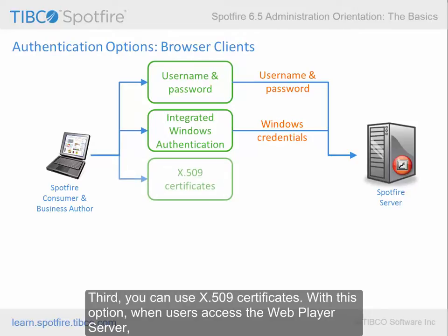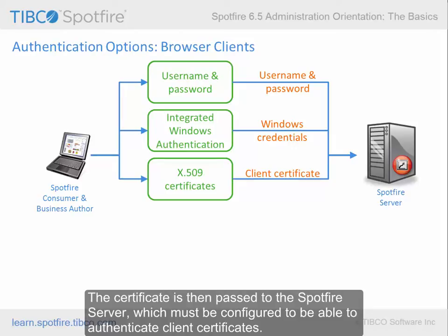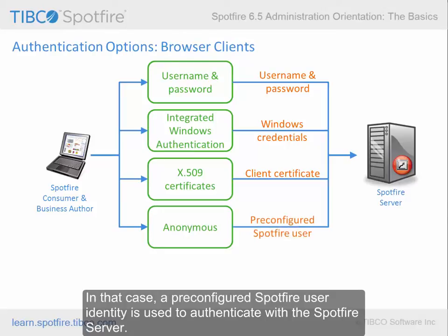Third, you can use X.509 certificates. With this option, when users access the Web Player server, they are automatically logged on using a client certificate stored on their local machine. The certificate is then passed to the Spotfire server, which must be configured to be able to authenticate client certificates. Lastly, you can allow all users anonymous access to the Web Player server. In that case, a pre-configured Spotfire user identity is used to authenticate with the Spotfire server.